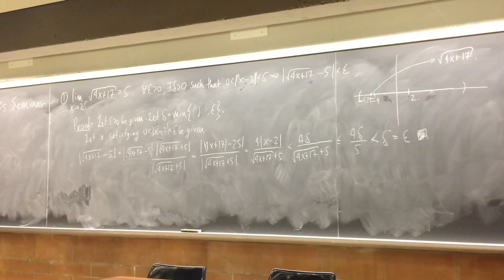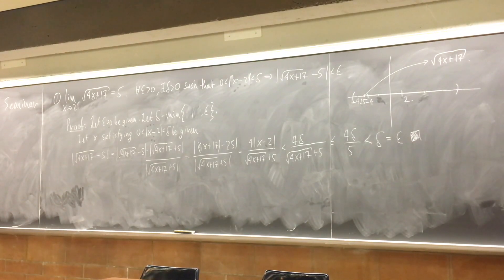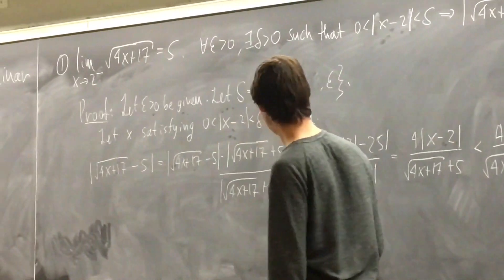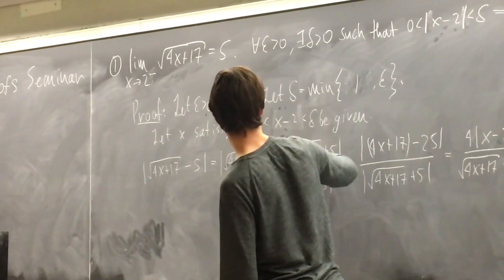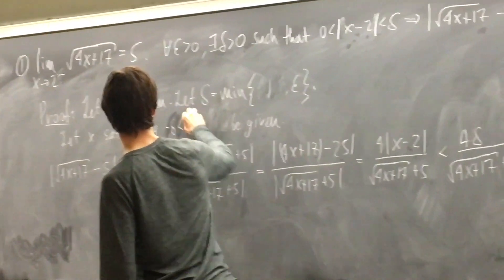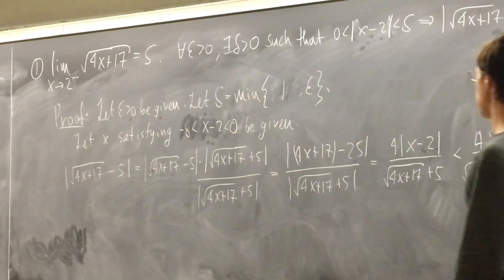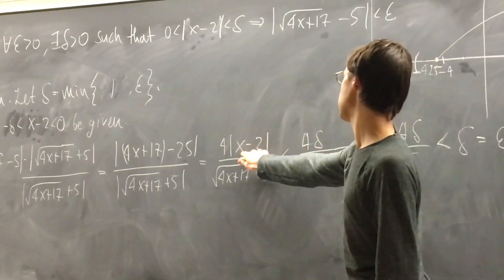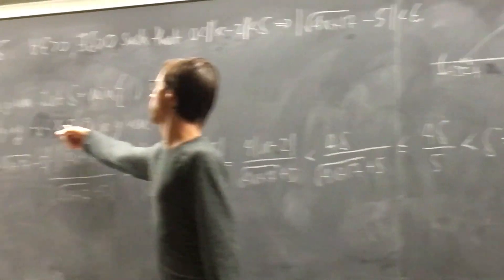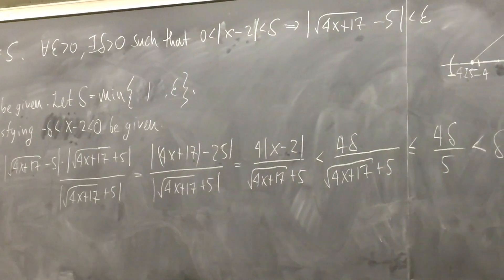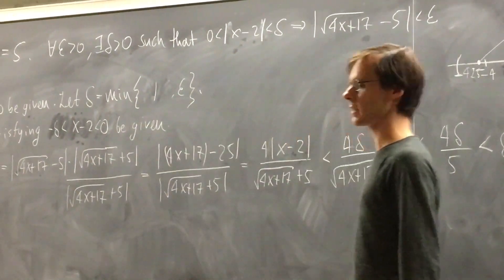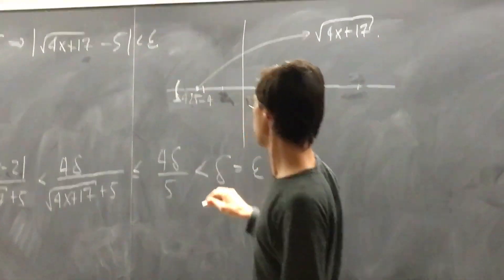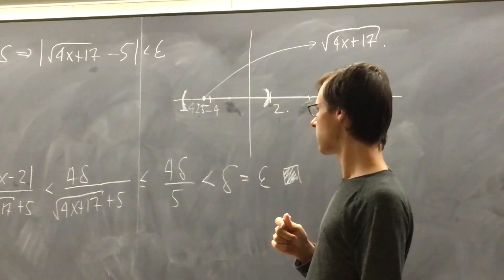If the limit was x approaching 2 from the left side, would the absolute value turn negative? The third case: we'd have negative delta less than x minus 2 less than 0. Nothing would fundamentally change — abs(x − 2) would still be less than delta. But we would also need a maximum size for delta here, because approaching from the left means the delta windows go to the left from 2.